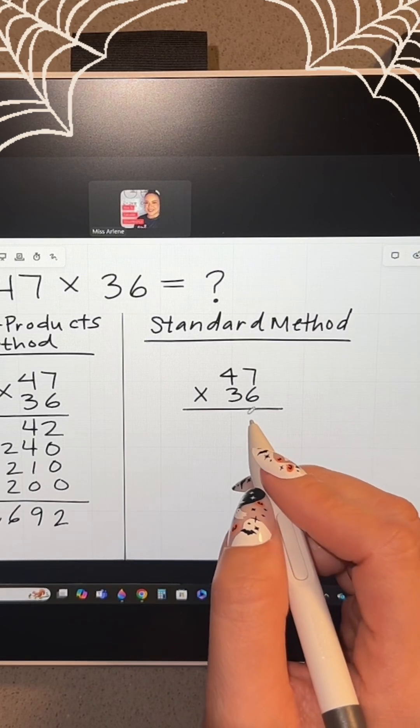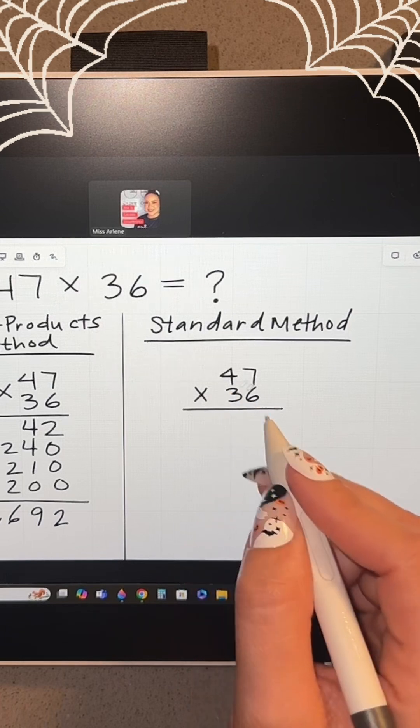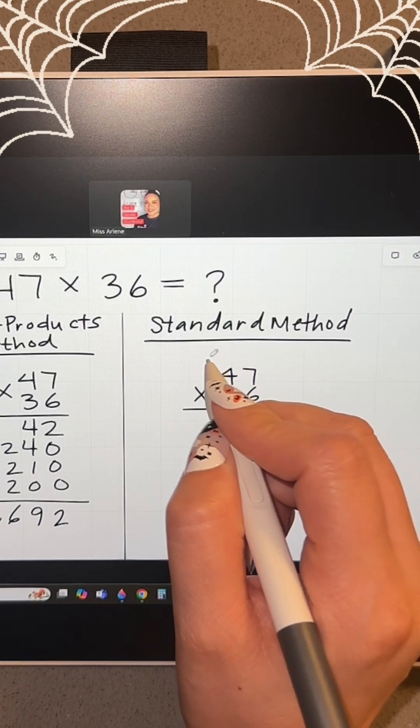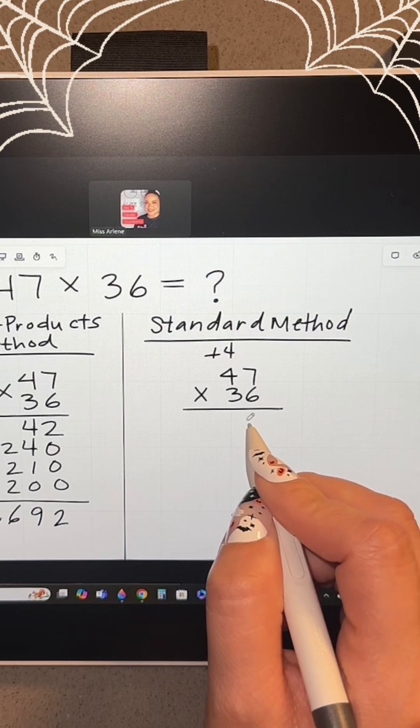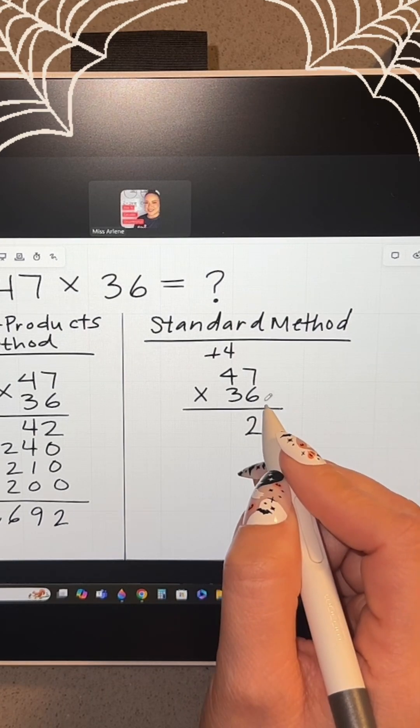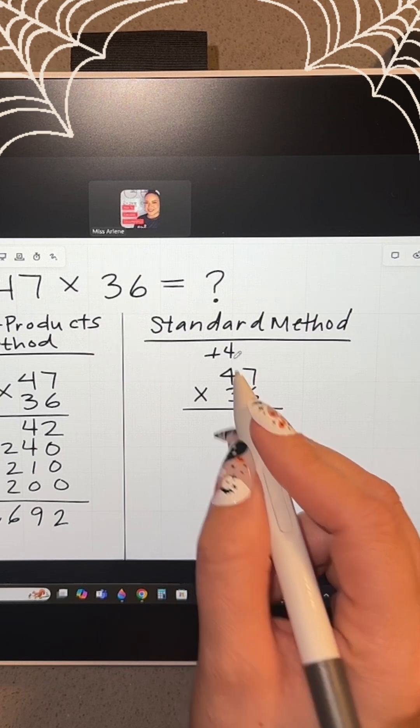Now let's solve it using the standard method. Same thing. We're going to distribute the 6 up and across. 6 times 7 is 42. This time we're going to carry over the 4 in the 10s place, the 2 in the 1s place. And 6 times 4 is 24 plus 4 more is 28.